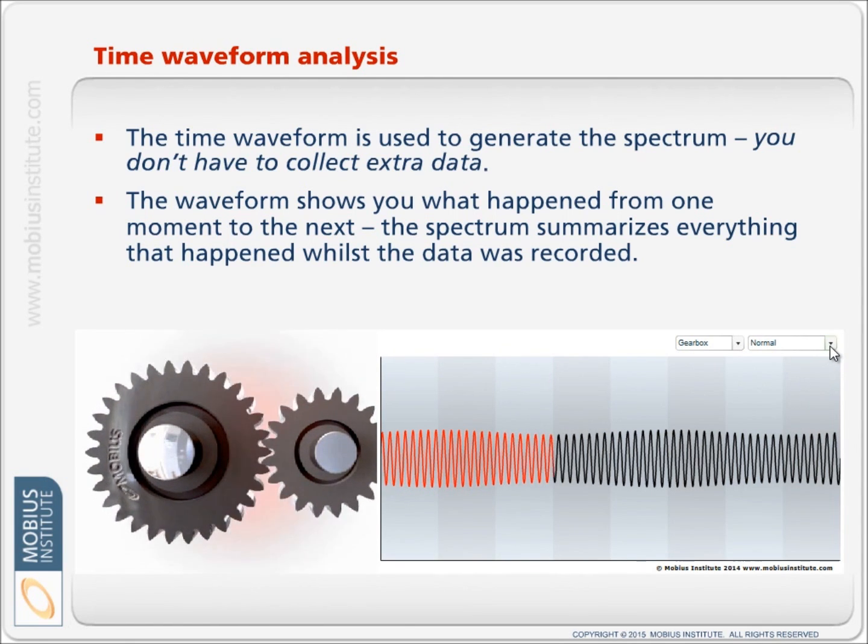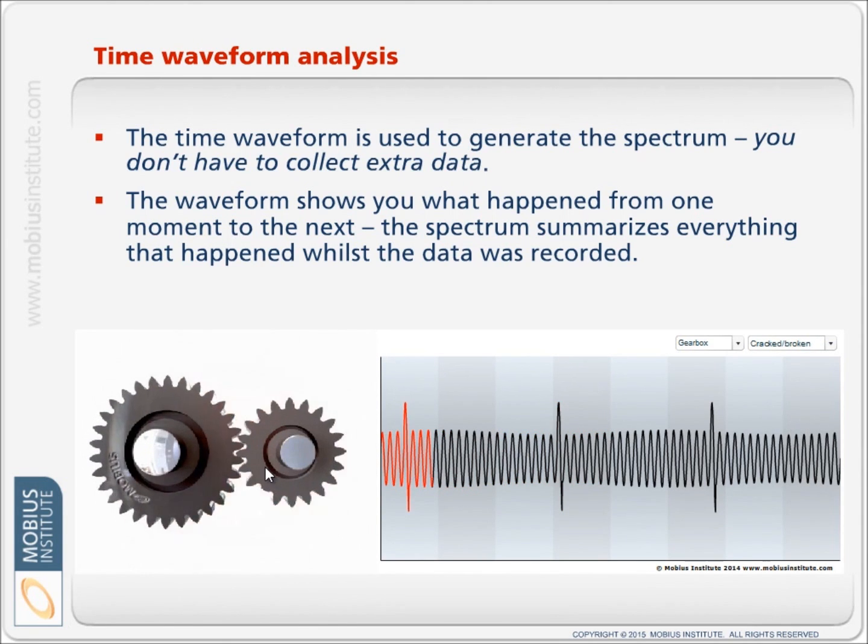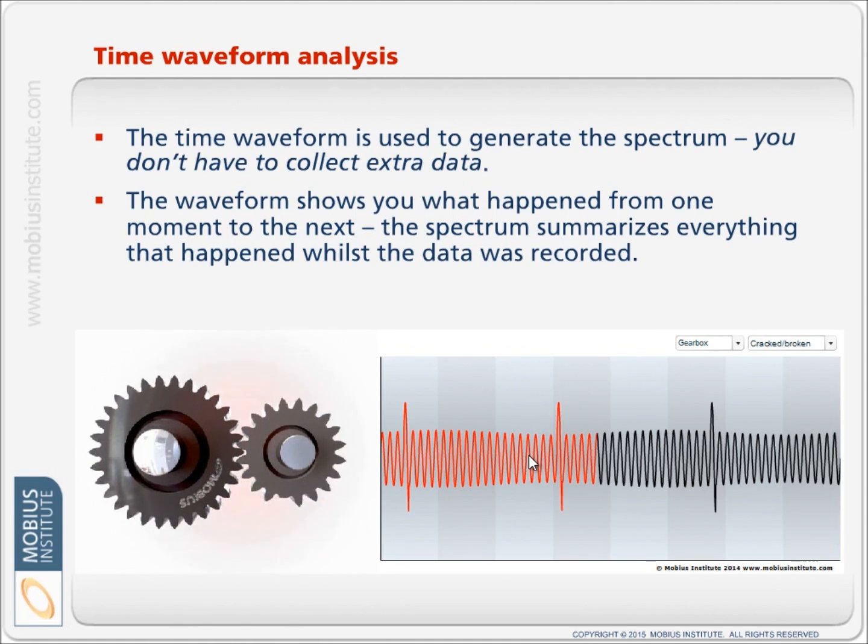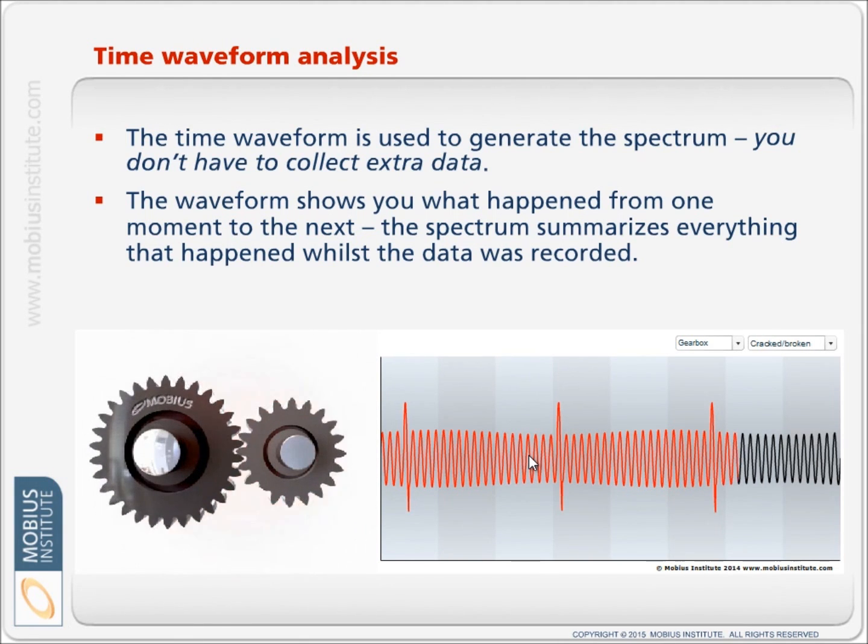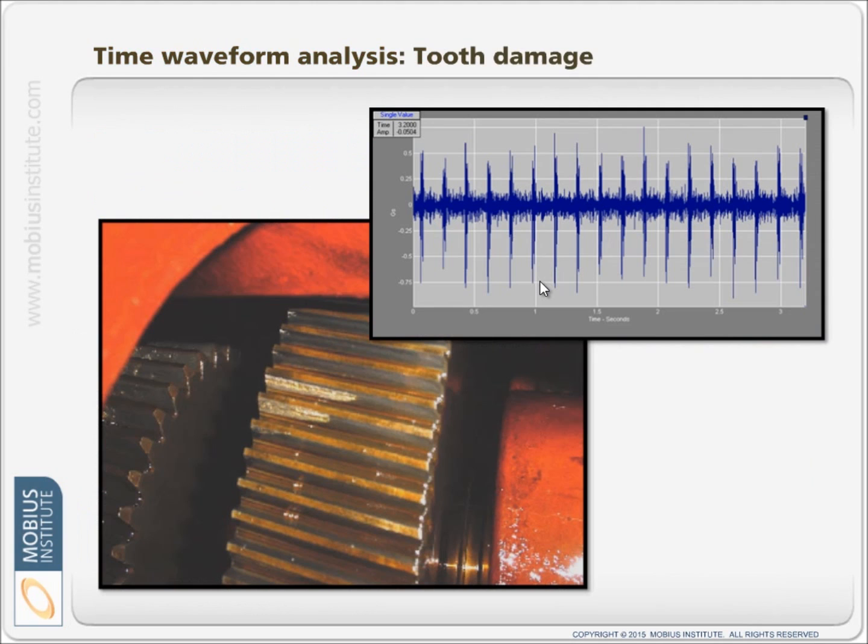Now if there was a problem with the gear, let's say a broken tooth, each time that broken tooth goes through the mesh we get an extra spike. We're not trying to talk about gearbox faults particularly. The point is that the time waveform gives us some information which would be harder to see in a spectrum. It is very clear what is happening in this case, but in a spectrum it is more difficult.